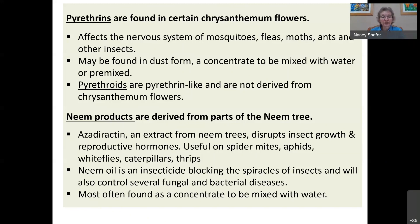Neem products are increasingly used as a first approach to many problems. Azadirachtin, extracted mainly from neem tree seeds, disrupts insect growth and reproductive hormones, preventing small insects from developing into adults. It's useful on spider mites, aphids, whiteflies, caterpillars, and thrips. Neem oil is an insecticide that blocks insect spiracles — the tiny breathing holes — and also controls several fungal and bacterial diseases. It's available as a concentrate mixed with warm (not hot) water.